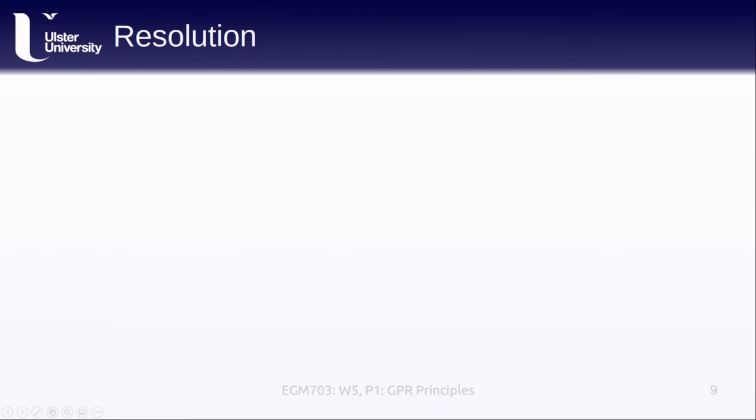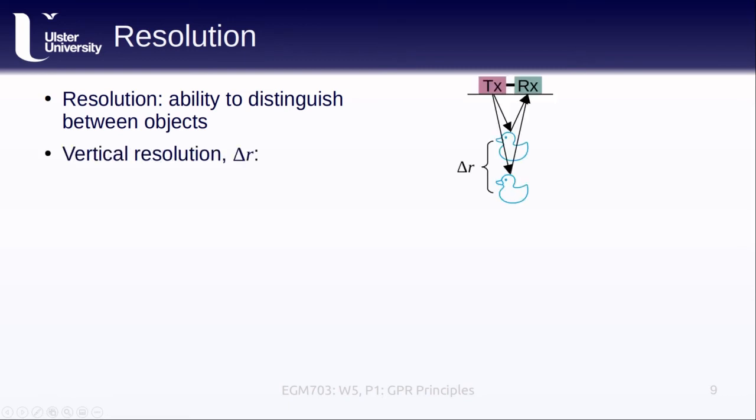Another thing we might like to know about is the resolution of our GPR system. That is, how well we can distinguish between different objects. Similar to satellite-based radar, where we distinguish between range and azimuth resolution, we think about this in terms of objects separated vertically and horizontally. The vertical resolution of a GPR system is a function of the pulse width of the signal W, and the speed of the signal through the material. You can see how this is directly analogous to the range resolution of radar. In an absolute best-case scenario, the vertical resolution is going to be the wavelength of the signal divided by four. So as the wavelength increases or the frequency decreases, the resolution also decreases.